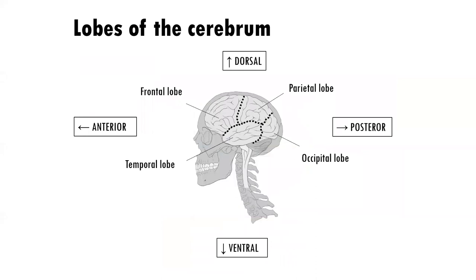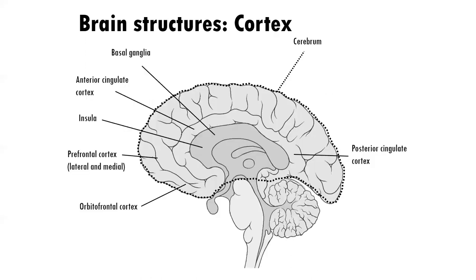Let's take a look at positionality — directional ways of understanding the brain. If something is towards the top of the skull, we call this dorsal. If something is towards the bottom, we call it ventral. If it is towards the back, we call it posterior, and towards the front, anterior. You will hear terms such as anterior cingulate cortex or posterior cingulate cortex, and it's helpful to understand where these structures reside within the brain based on this terminology.